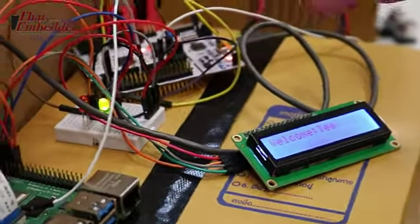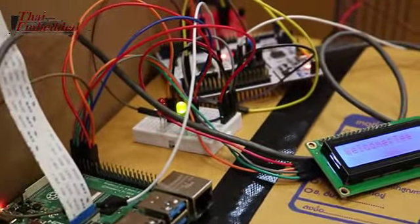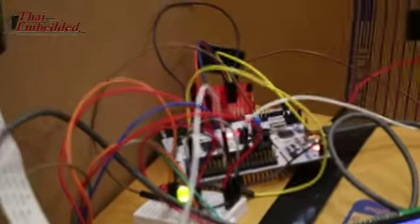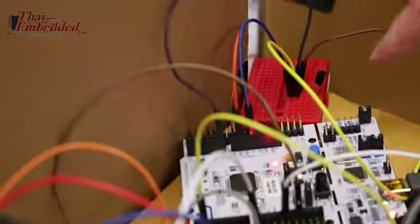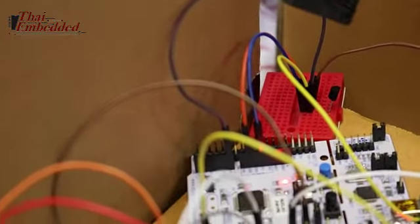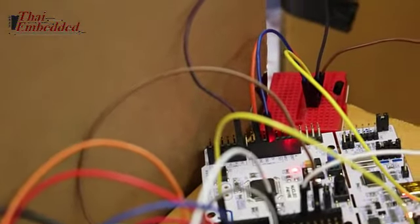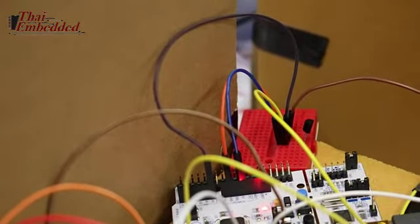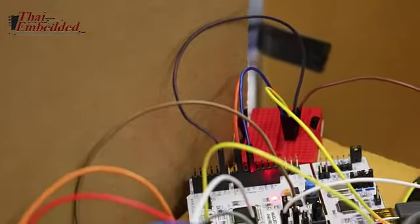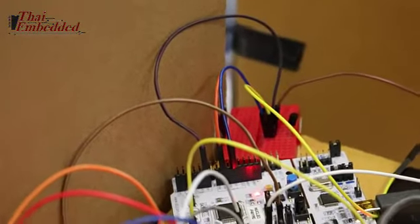After the green light is shown, the guest can move to the second stage, which is the thermometer sensor. This is the LM35, used to measure temperature. If the temperature is between 35.5 and 37.5 degrees, the gate will open.